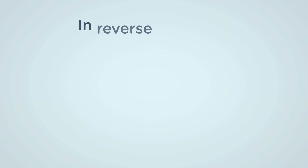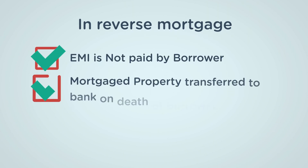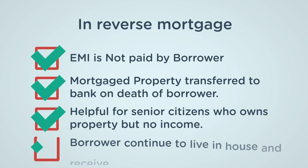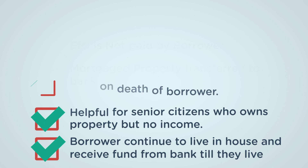In reverse mortgage, EMI is not paid by the borrower. The mortgage property is transferred to the bank on the death of the borrower. It is helpful for senior citizens who own property but have no income. The borrower continues to live in the house and receives funds from the bank till they live.